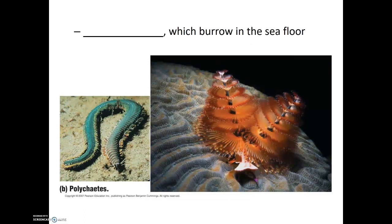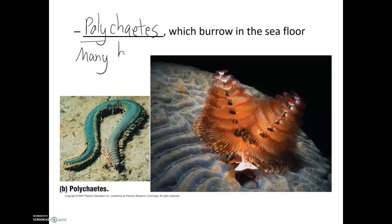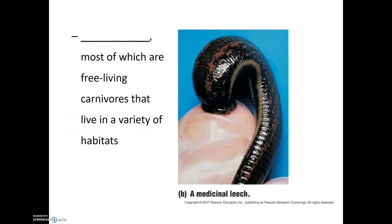The next group of annelids are found exclusively in the oceans. The last group of annelids are the leeches. Most leeches are free-living carnivores that live in a variety of different habitats, but typically rely on the blood of other organisms to survive.